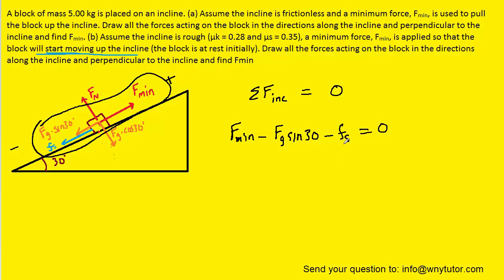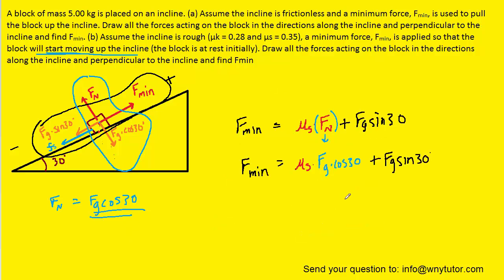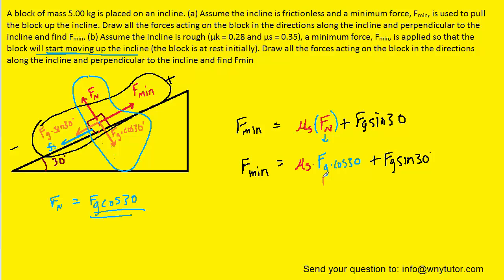The static frictional force can be written as μs times the normal force Fn. From the free body diagram, the normal force is perpendicular to the incline along with Fg·cos(30°). Since the block is not accelerating perpendicular to the ramp, the normal force equals Fg·cos(30°). Substituting Fn = Fg·cos(30°) into the friction term, and replacing Fg with mg throughout, we get: Fmin = mg·sin(30°) + μs·mg·cos(30°).